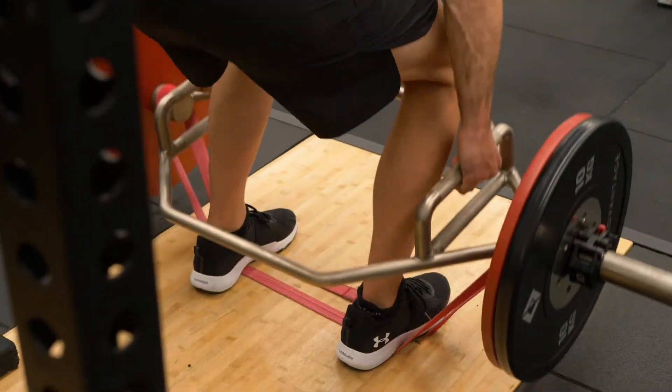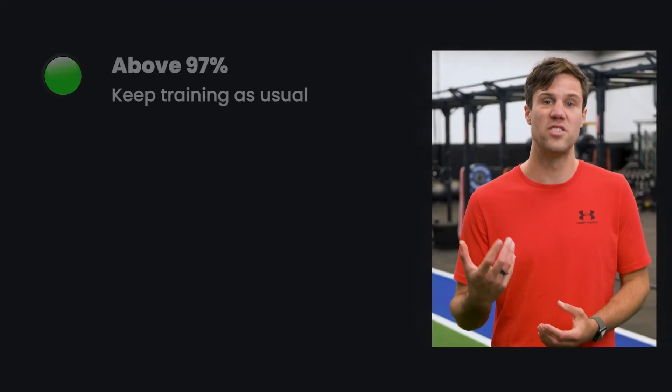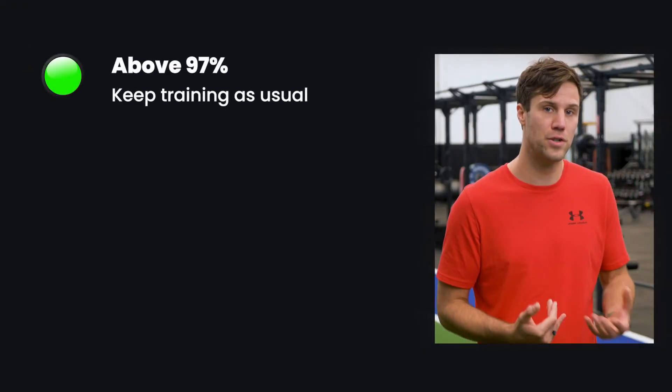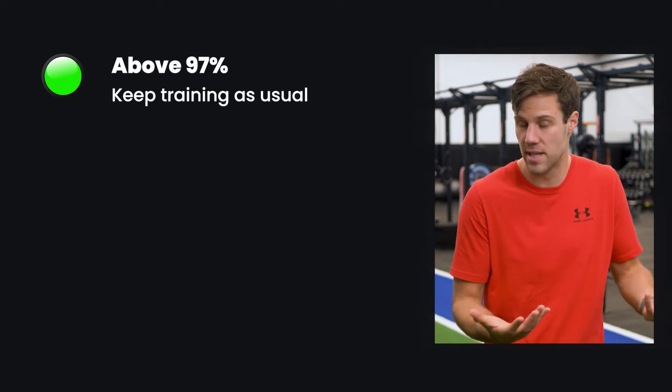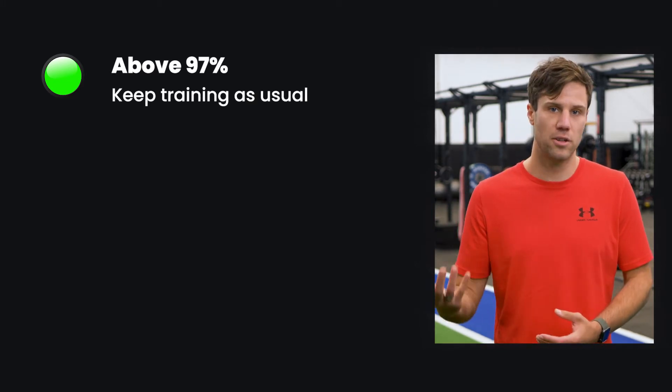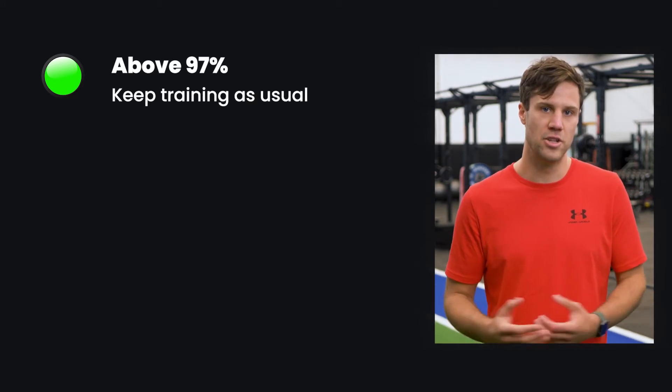Auto-regulation is a broad general term, but basically it's about adjusting your training in real time to get the best results. One practical example is to use a traffic light system in your training — you take today's velocities compared to your most recent 30 days for that exercise and load, and you compare. If you're above 97% of your 30-day average for that 60-kilo squat, for example, that's a green light — carry on, no need to make any adjustments.